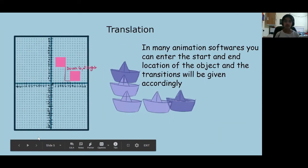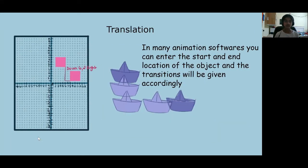Translation. In many animation software, you can enter the start and end location of the object, and the transition will be given accordingly. If I were to give the book a certain place where it would start, I would have another place at the end. For example, if the frame was 60, then that would be the end result.